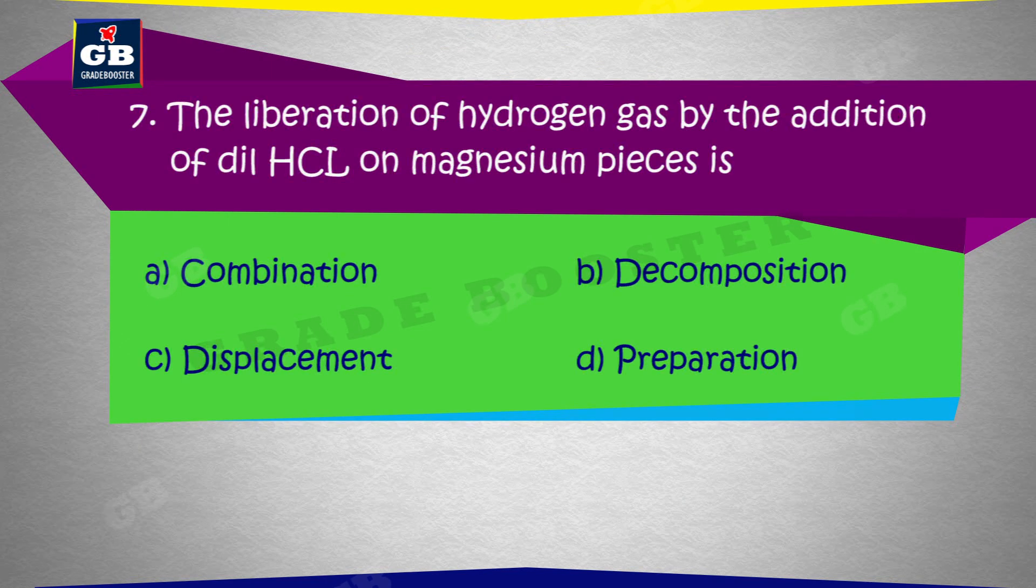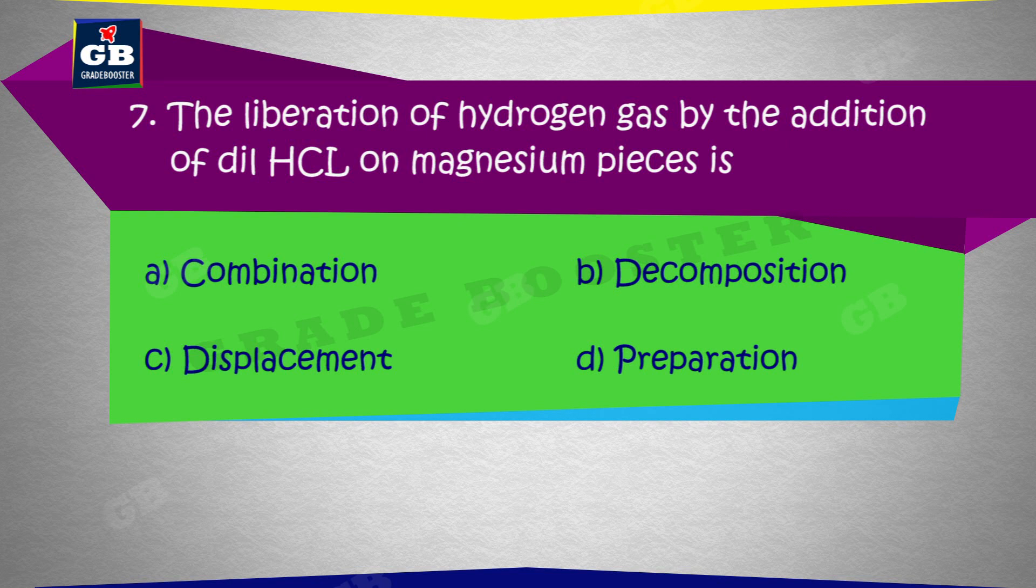The liberation of hydrogen gas by the addition of dilute HCl on magnesium pieces is: A. Combination, B. Decomposition, C. Displacement, D. Preparation.